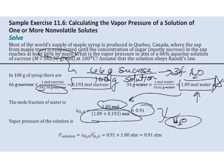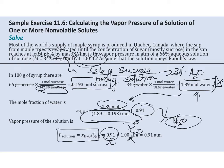Now we can plug into Raoult's Law: here's the mole fraction of water in the solution, and this must be given to you — the vapor pressure of water when it is pure at that temperature. That temperature happens to be the boiling point of water, where by definition the vapor pressure equals atmospheric pressure.